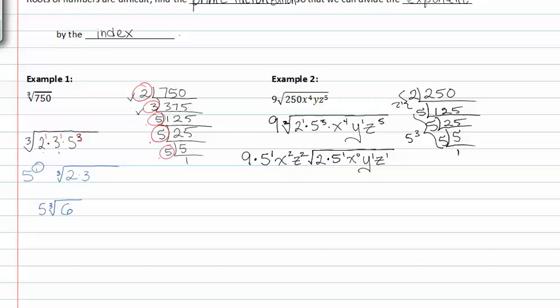At this point we can multiply the values or numbers together outside the square root and we get 45x to the second z to the second times the square root. 2 times 5 which is 10, x to the 0 which we remember is 1, 1y to the first z to the first and this is my final answer.